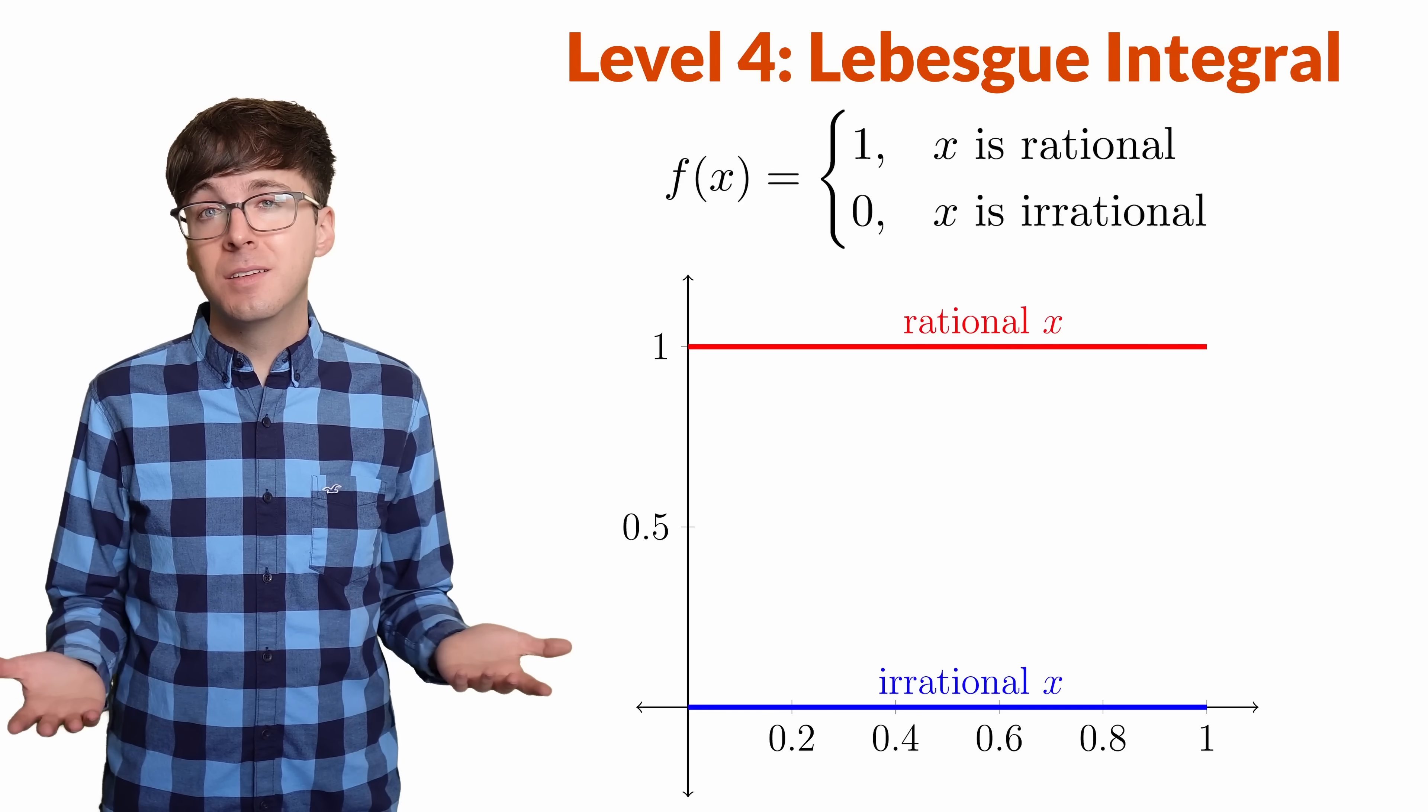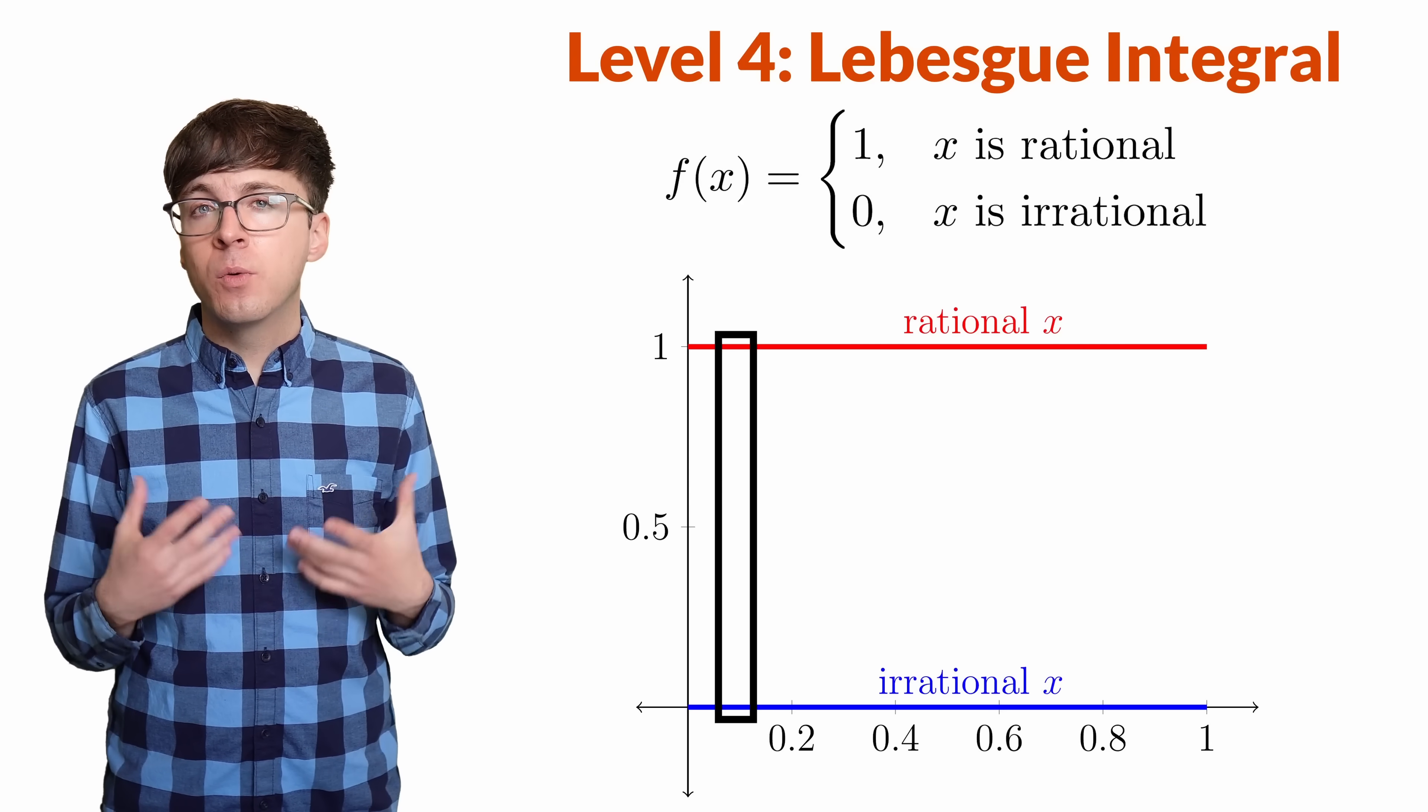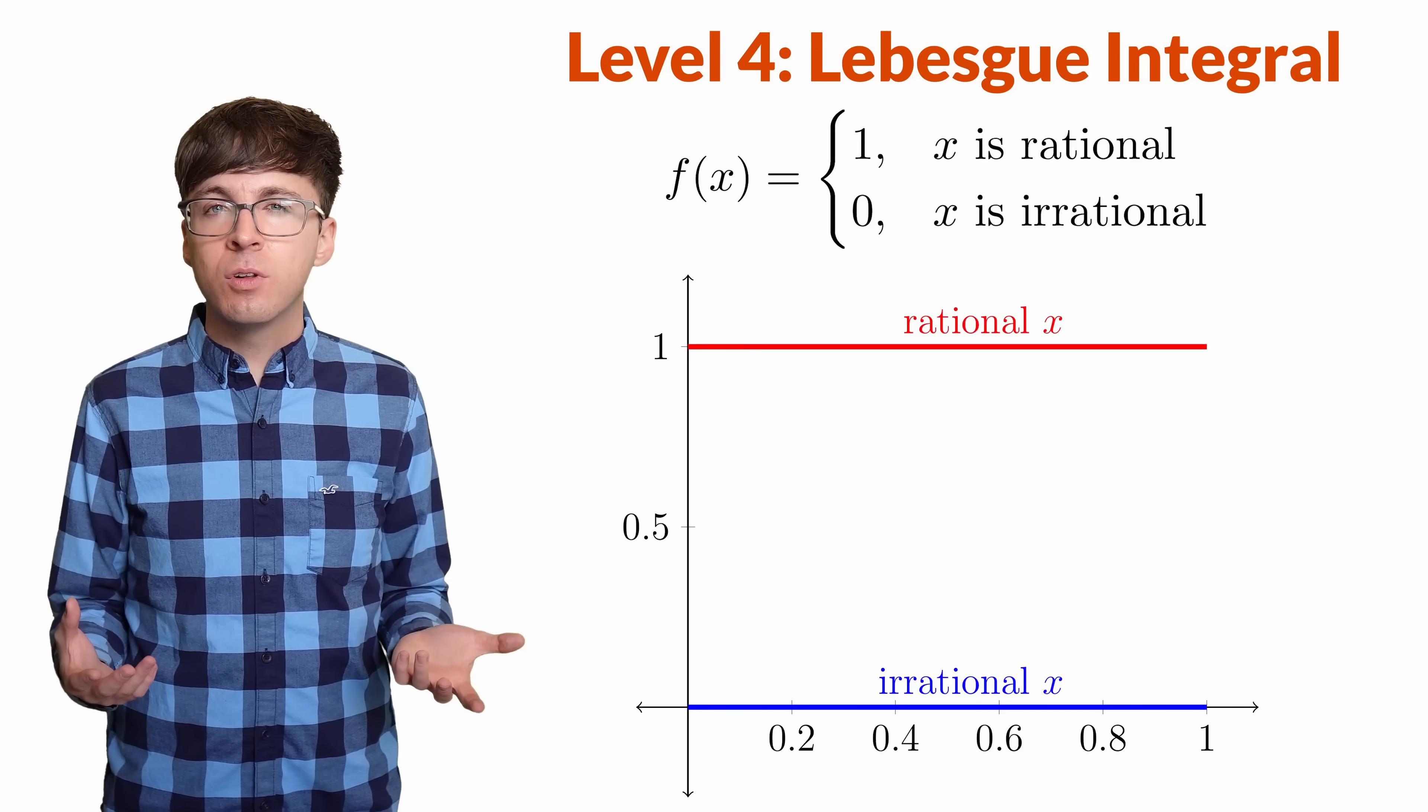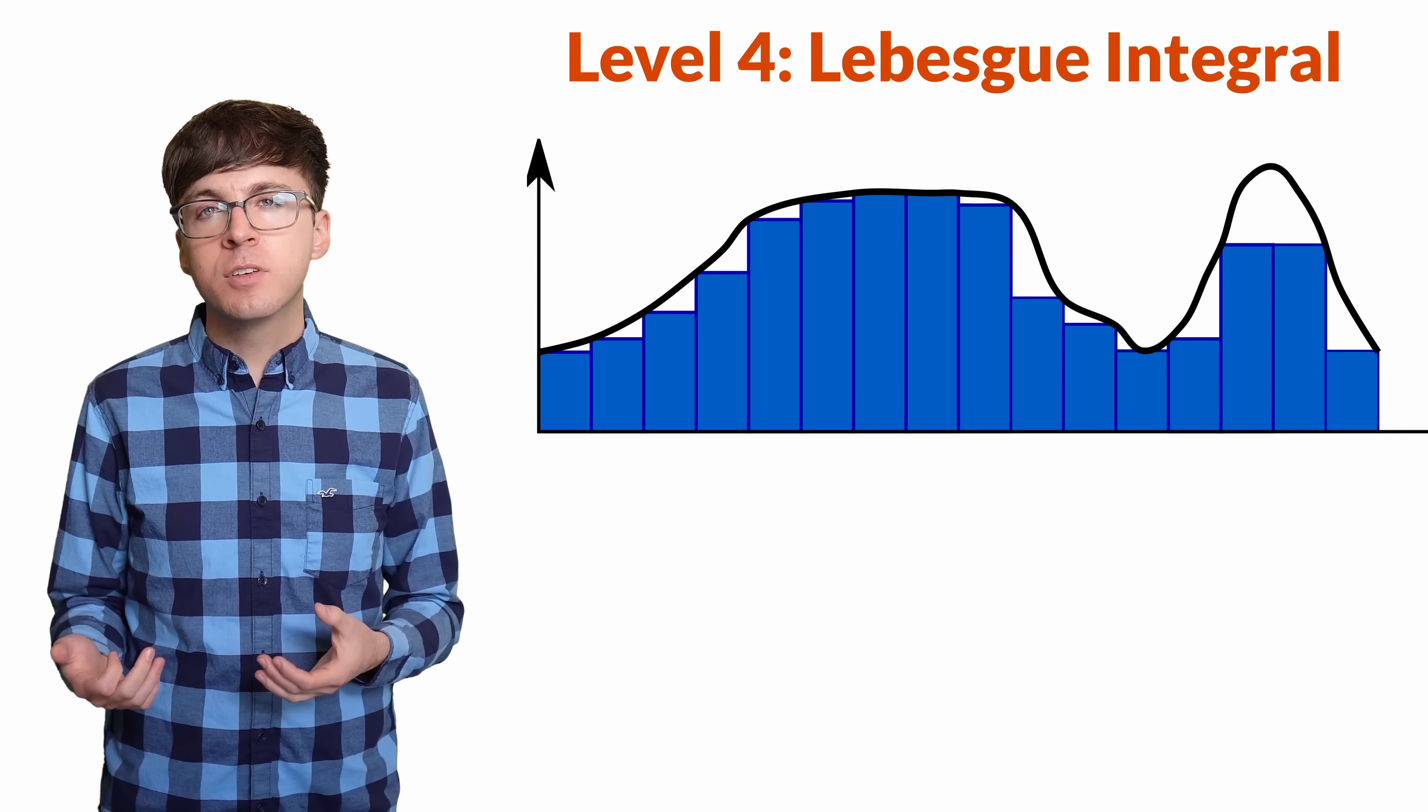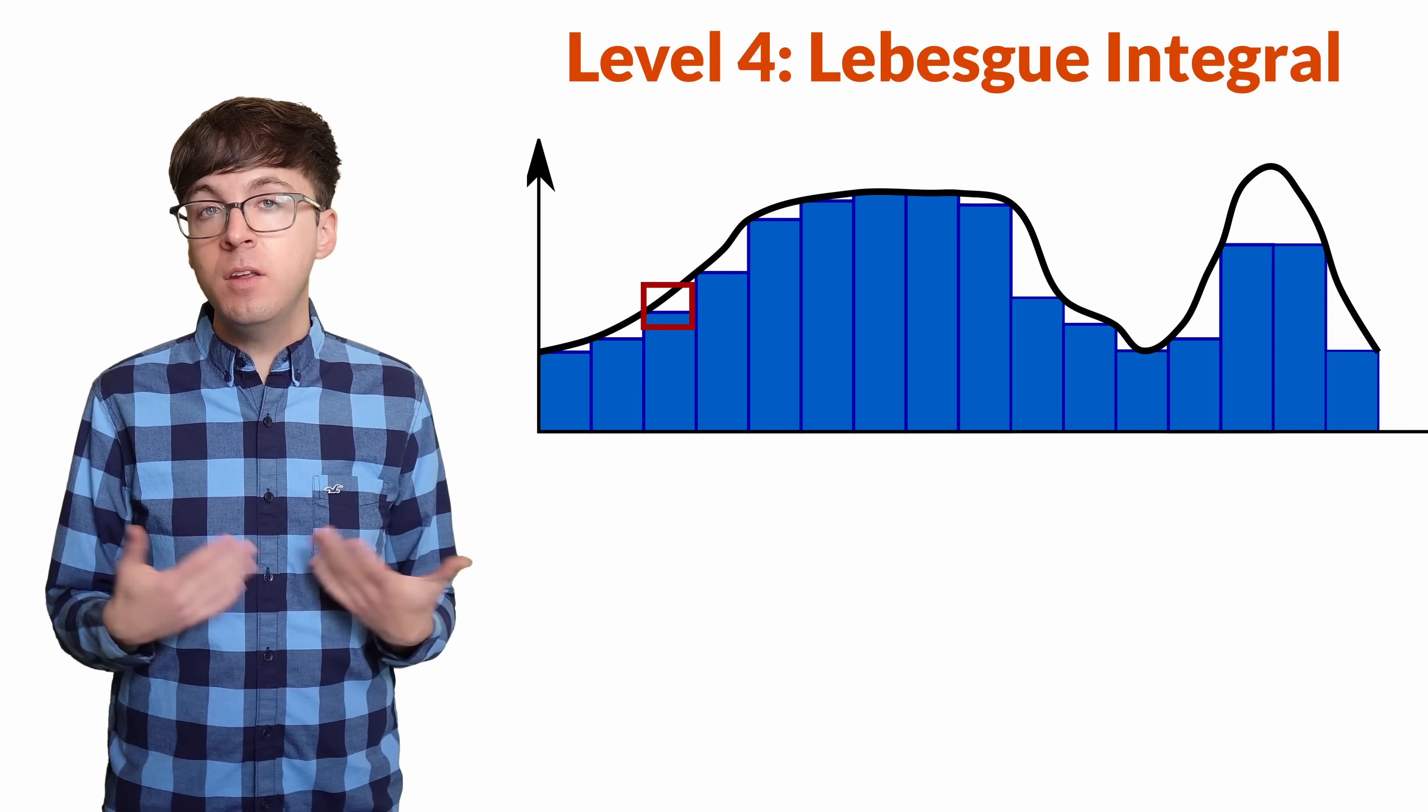This function f is discontinuous everywhere. It's always jumping from 0 to 1 to 0 to 1. No matter how small we make our rectangles, there's always infinitely many jumps between 0 and 1 within each subinterval. So the Riemann integral is not going to work, and we need a new approach. With the Riemann integral, we divide the domain into a partition and create vertical rectangles. This is like adding up the values of the function as we see them from left to right.